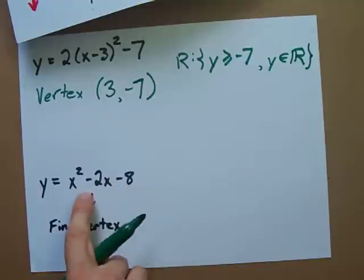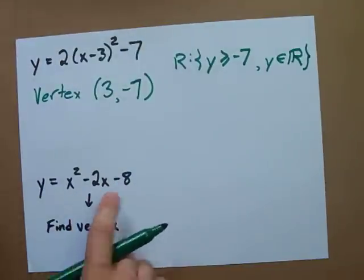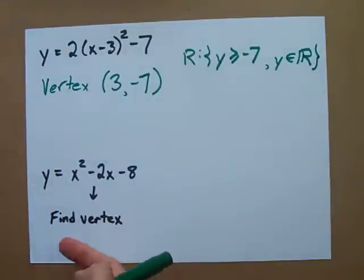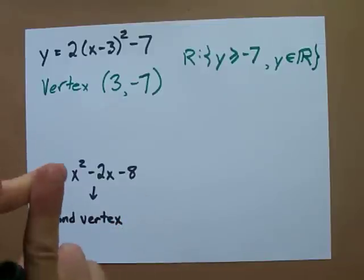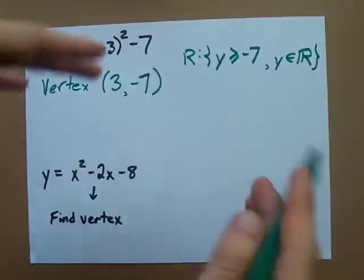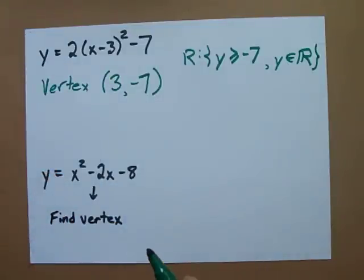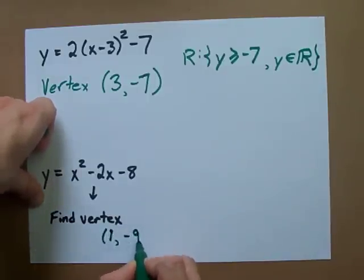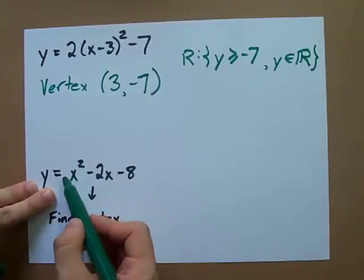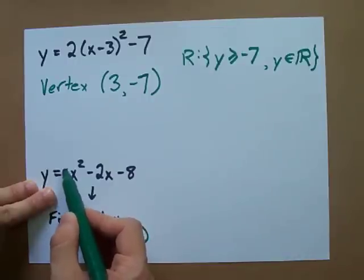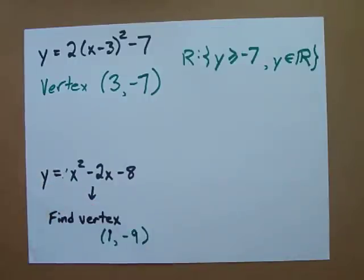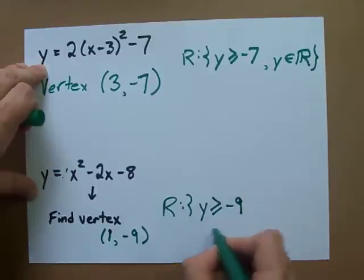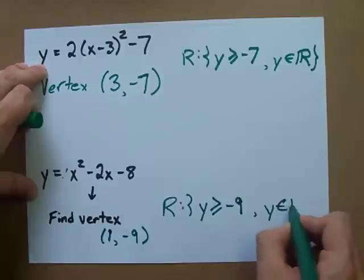Finally, you could be given one like this — not written in vertex form, so you can't just read the vertex right off. You're going to have to find the vertex on your own. You can complete the square, or use the formula negative b over 2a. When you find it, the vertex turns out to be positive 1 and negative 9. It opens up because the coefficient in front of x² is positive 1, so the range is y ≥ negative 9, and y must be a real number.